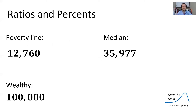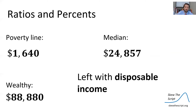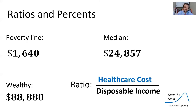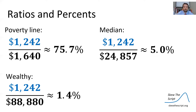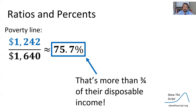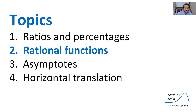We have poverty line, median income, and wealthy brackets. We subtract the cost of basic needs — $11,120 — from each to get disposable income. Then we take the ratio of healthcare cost to disposable income, putting 1242 over each of these numbers. Note that for those below the poverty line, that's more than three-fourths of their disposable income — 75.7% would be spent on healthcare. That's why the United States has Medicaid for low-income people, which we will discuss later.